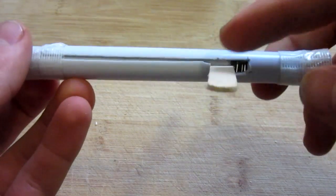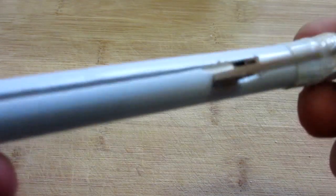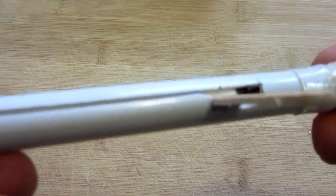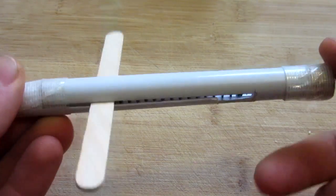The fins on the popsicle stick are locked right there on those notches. Sorry, it's hard to see. But when you flick it up, it shoots forwards.